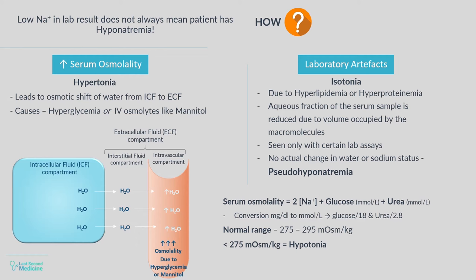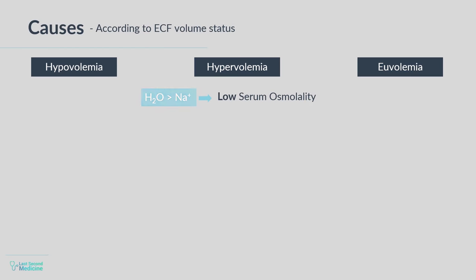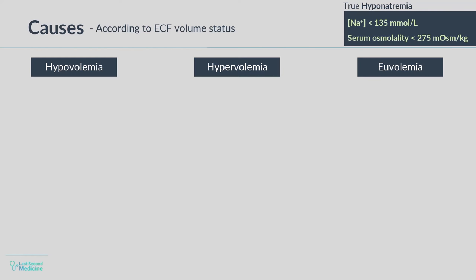Now that it has been established that the hyponatremia we are dealing with is true hyponatremia, let's go back to volume status. Assess the volume status of the patient and see whether the patient is hypovolemic, euvolemic, or hypervolemic. If the patient is hypovolemic, there is depletion of sodium and water but the sodium deficit exceeds the water deficit. If the patient is hypervolemic, excessive water retention has occurred due to sodium retention and there is volume expansion. And lastly, if the patient's volume status is normal, there are no major disturbances of body sodium content and the patient is clinically euvolemic.